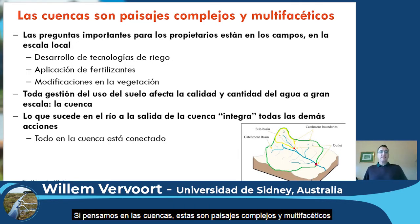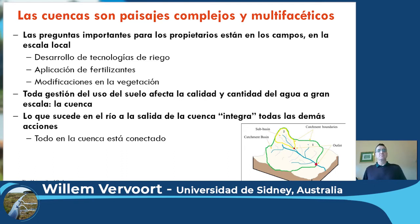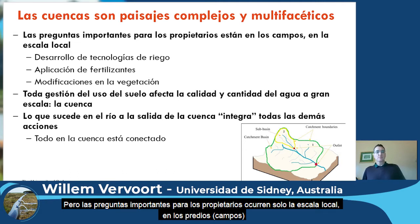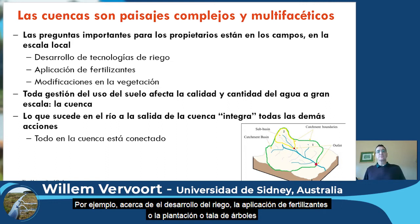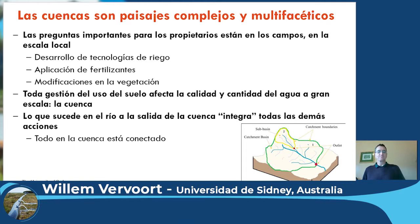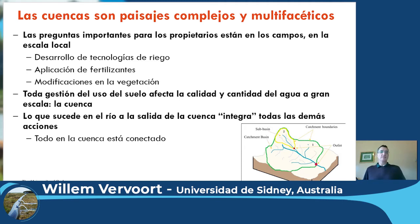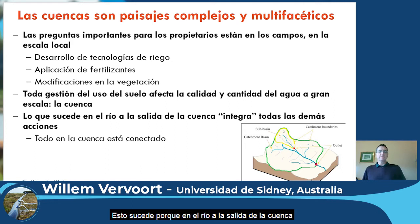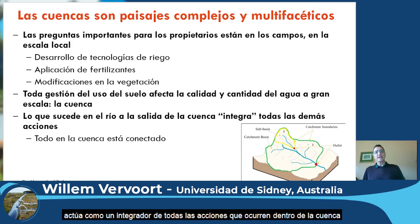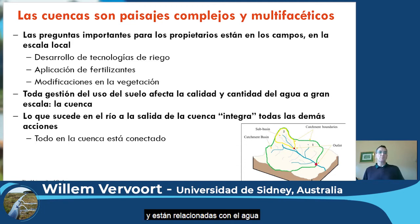If you think about catchments, catchments are actually complex landscapes which have many facets. But the important questions for landowners are generally just at the local scale on the fields — for example, irrigation development, fertilizer application, or the planting or clearing of trees. However, all land use management actually impacts water quality and quantity at the larger scale, at the catchment scale. This is because the stream at the catchment outlet is really an integrator of all the actions that happen related to water within the catchment.